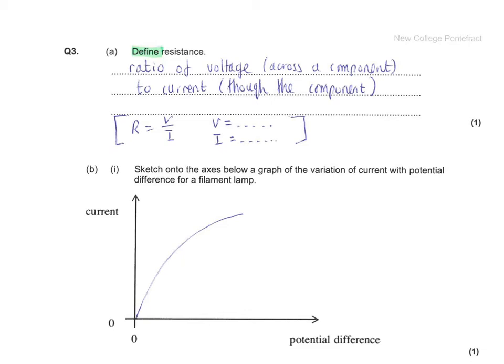This is the Electricity Homework Booklet, question 3. Define resistance. Resistance is defined as the ratio of voltage across a component to current through the component. If you decided to try to define it using the equation, then do make sure you state what each symbol represents.